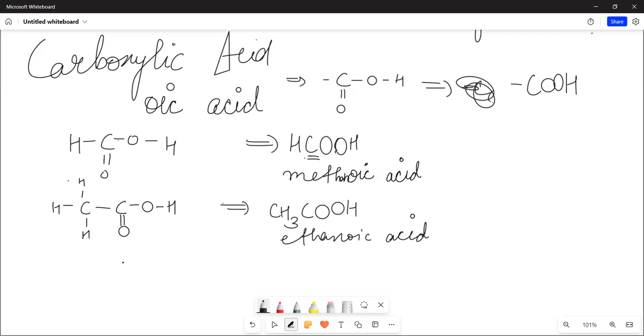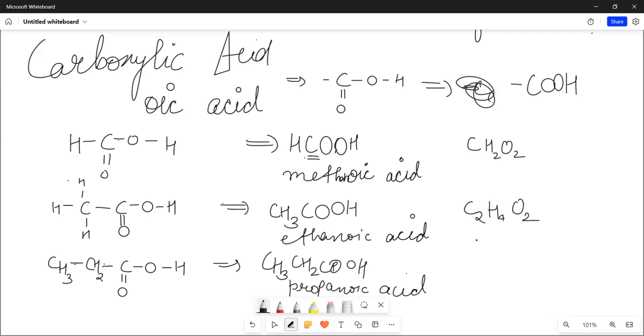Now, if I need three carbon: C double bond O, single bond O, single bond H. Now, what do you need? Two carbons attached. The molecular formula for three carbon carboxylic acid is C3H6O2. This is propanoic acid.